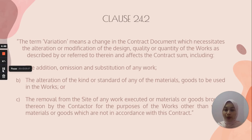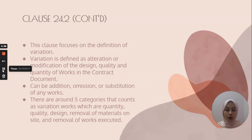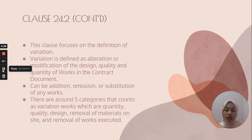Here is Clause 24.2. This clause focuses on the definition of Variation. Variation is defined as alterations or modification of the design, quality and quantity of the works in the contract document. It can be additions, omission or substitution of any works. There are around five categories that count as variation of works: quantity, quality, design, removal of materials on the sites, and removal of the works executed.